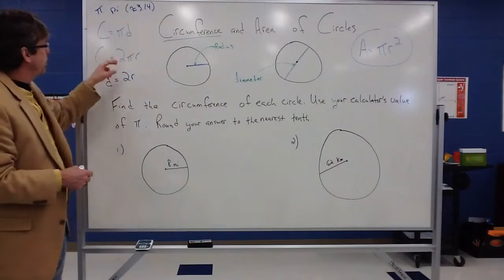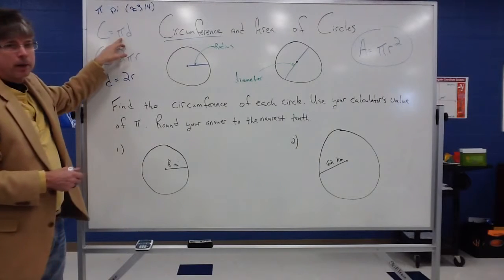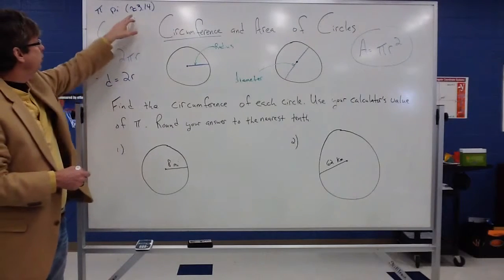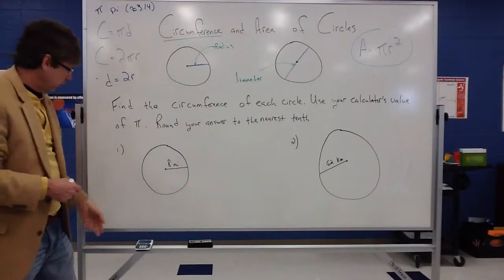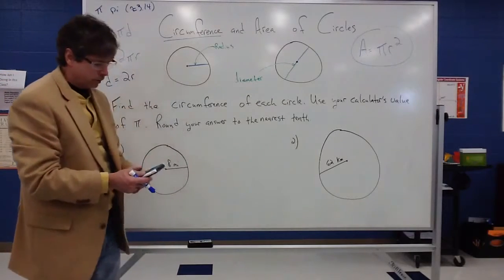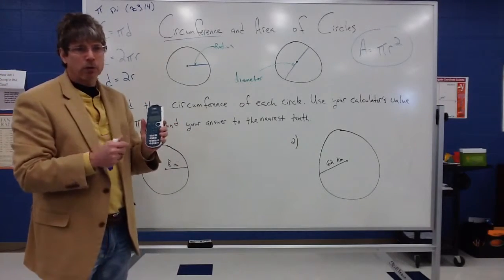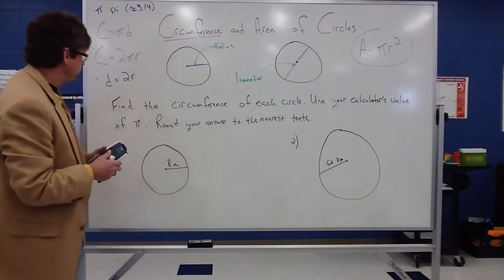And both of the formulas depend upon this symbol pi. Again, pi typically is approximately 3.14, but on our calculators, our calculator actually has that symbol that we can work with. So we're going to use that.